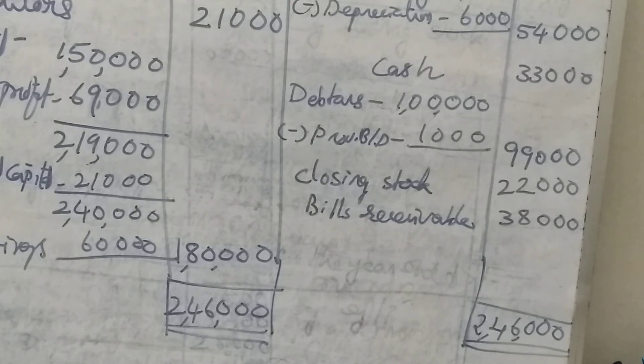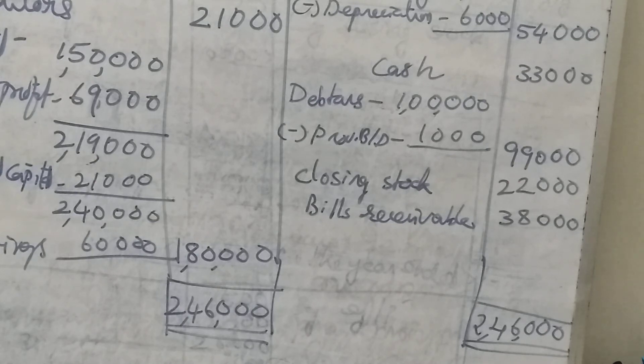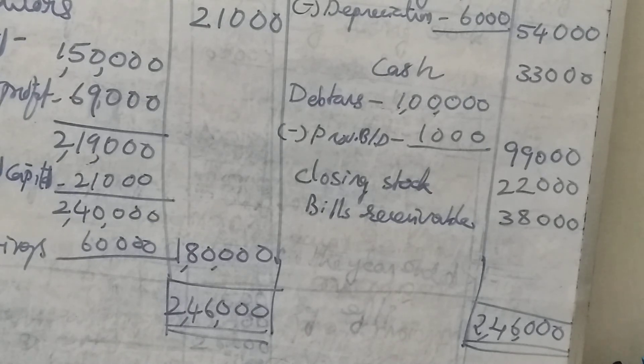I think all of you understood well. This is the method of preparing Statement of Affairs, Trading Account, Profit and Loss Account and Balance Sheet. Thank you.